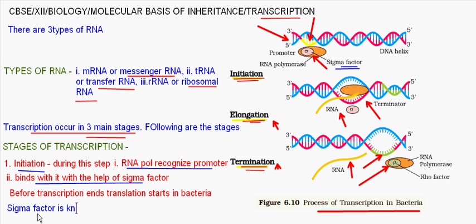During elongation, helicase helps in unwinding of the double-stranded DNA, and RNA polymerase can freely move along the template DNA strand. As it moves forward, it keeps on adding ribonucleotides, and as a result the newly synthesized RNA strand keeps on growing. So elongation is basically the process of addition of ribonucleotides.